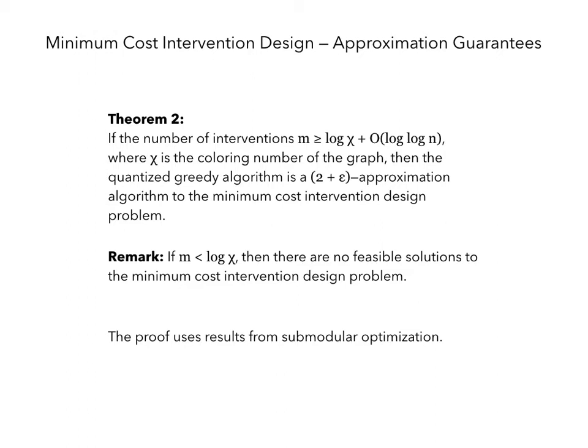Our next theorem is an approximation guarantee for the quantized greedy algorithm, which is a variant of the greedy algorithm. We show that if the number of allowed interventions m is greater than or equal to log chi plus order log log n, then the quantized greedy algorithm is a 2 plus epsilon approximation algorithm. We note that if m is less than log chi, then there are no feasible solutions to the problem. Our proof uses techniques from submodular optimization.